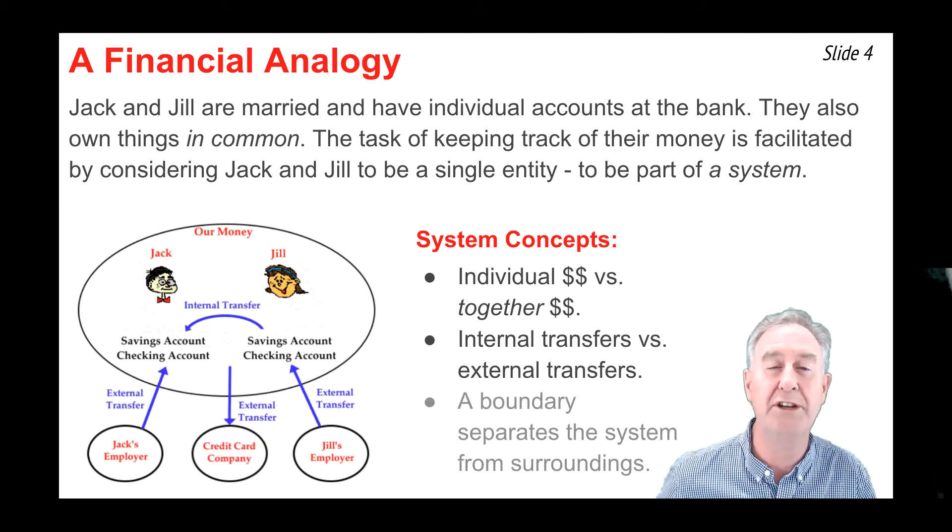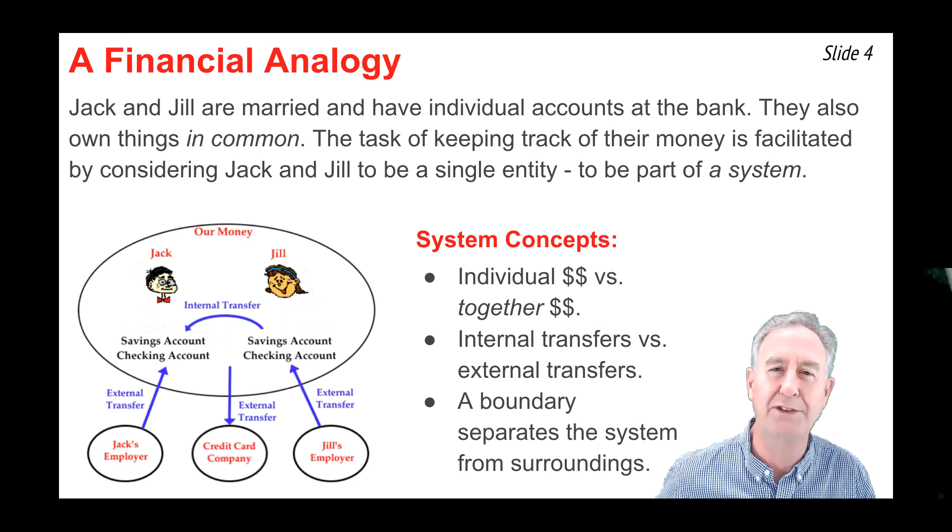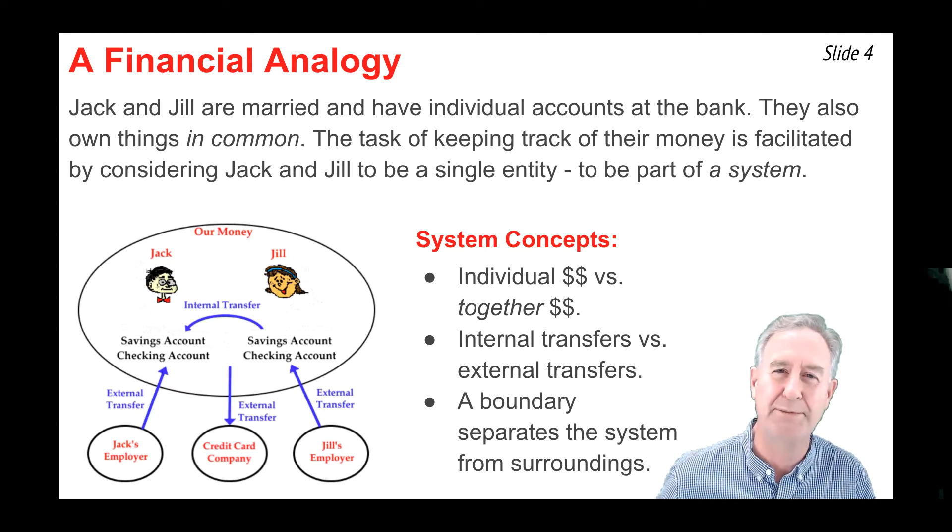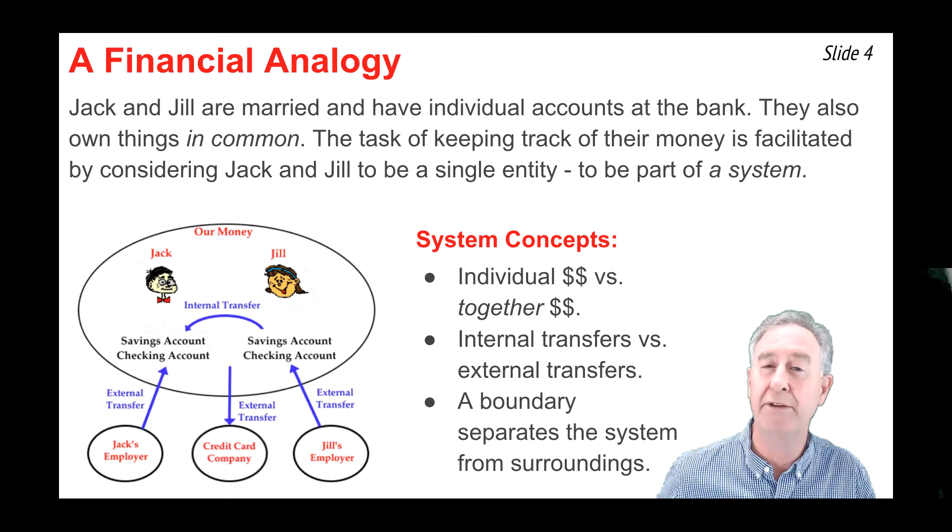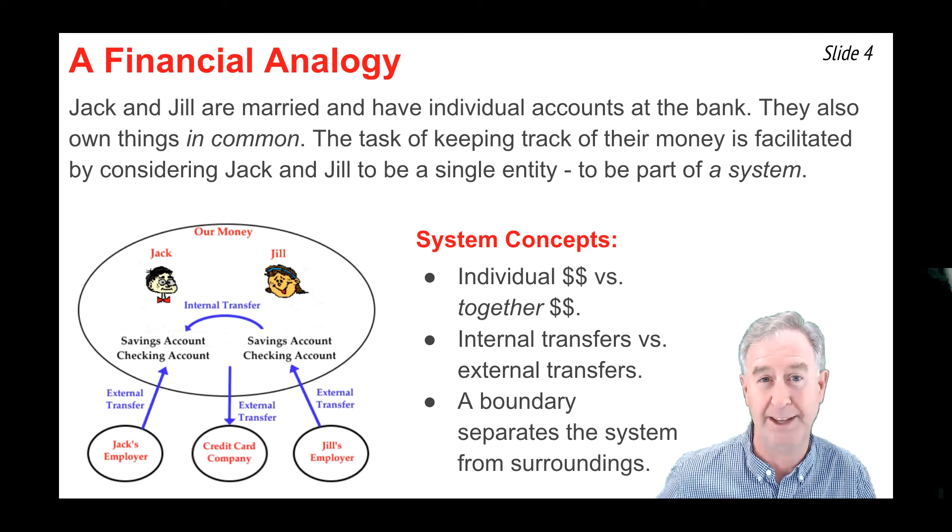When we think of Jack and Jill's money in this way, as a system, we consider an imaginary boundary that surrounds Jack and Jill, and we think of money passing across the boundary to change the amount of money that's inside that system. This type of thinking, system thinking, is useful whenever you're trying to keep track of something. We'll use it for money, and we'll use it for energy.